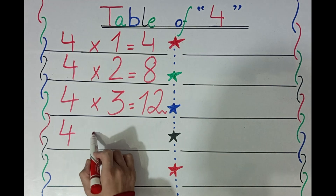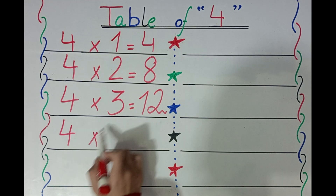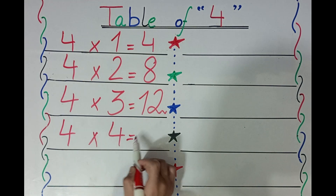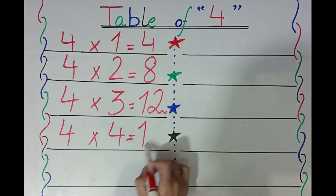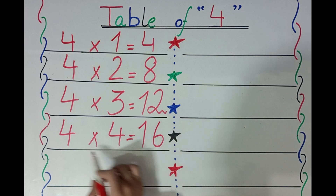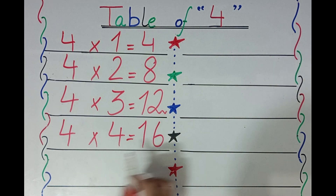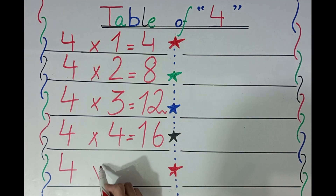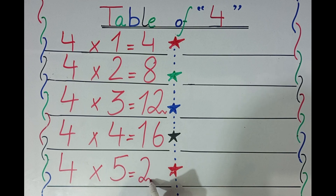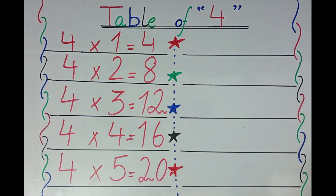Four four's are sixteen. Four five's are twenty.